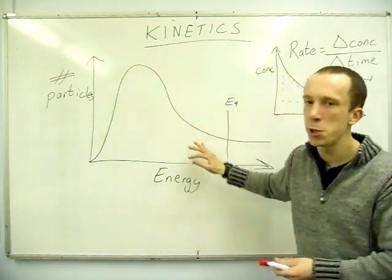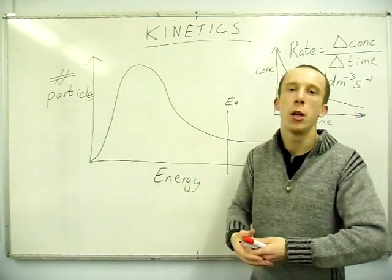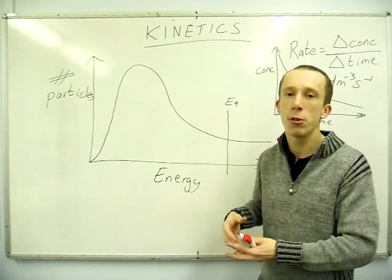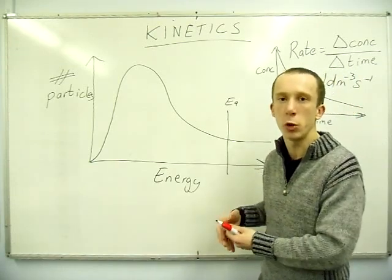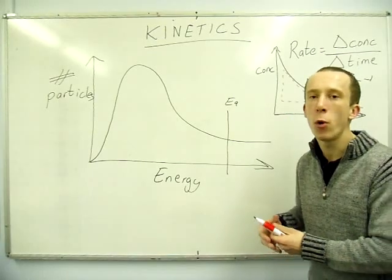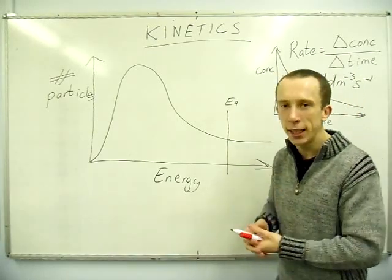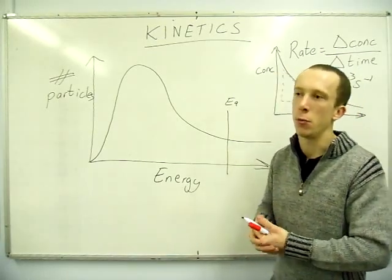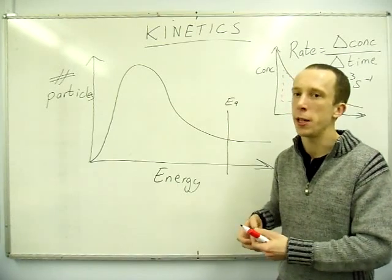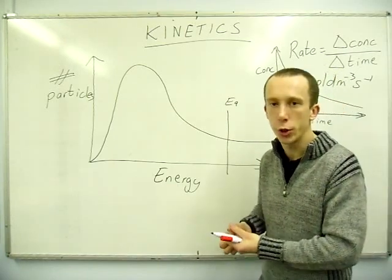Anything with a higher energy value will react. So the area under here is the amount of particles that will react. Under the graph represents the total amount of particles. So when you are asked to actually show an increase or decrease in temperature, which we will do in a moment, make sure your area is exactly the same. Do not draw it out accurately. It is a sketch, but it should look the same.